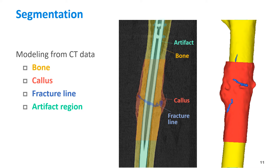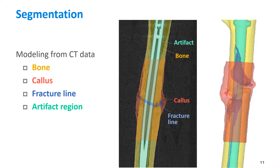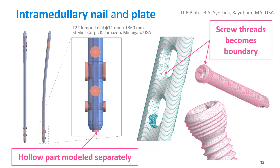The geometries of bone, callus, and fracture line were constructed from CT images. Regions for separating the upper limit of material properties, which reduced the influence of artifact, were modeled separately. Some of the implants were given by the manufacturer, but we created them using Metasequoia for reasons of resolution and mesh generation.